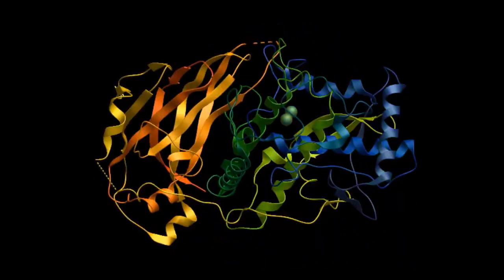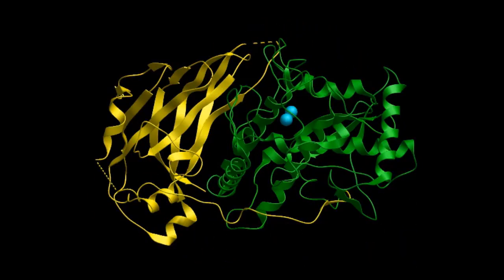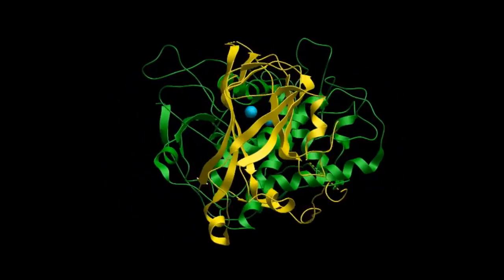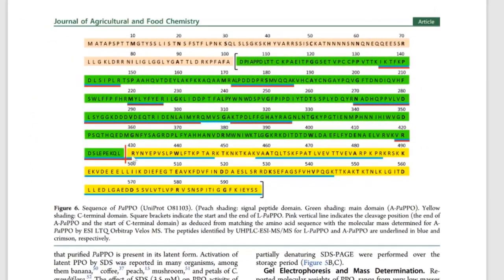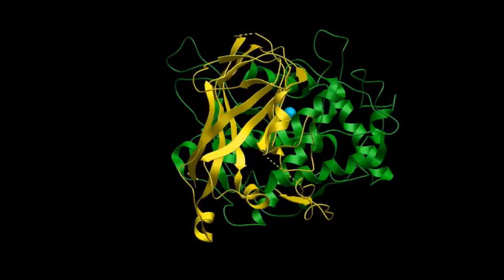Here the color coding was by domains. The catalytically active domain in green. The C-terminal domain that shields the catalytically active domain is color-coded in yellow.